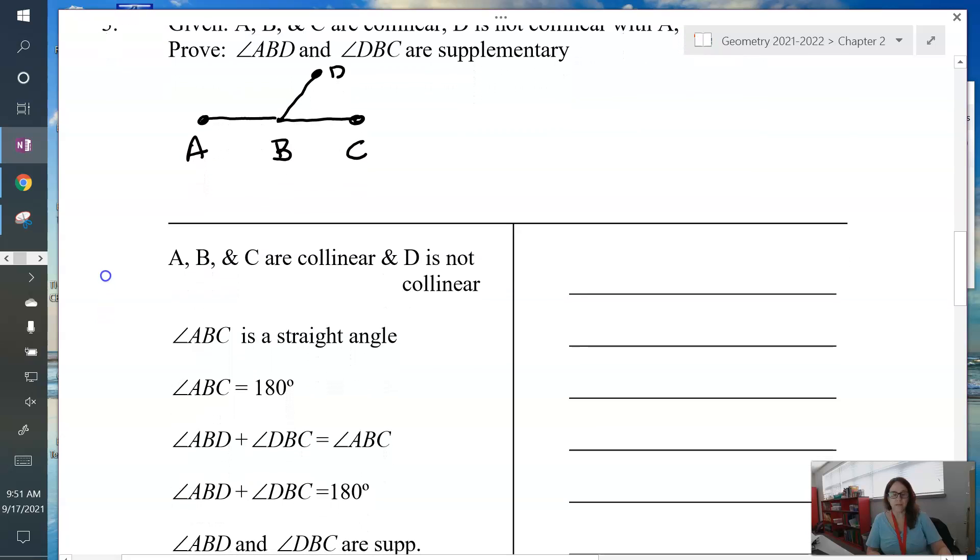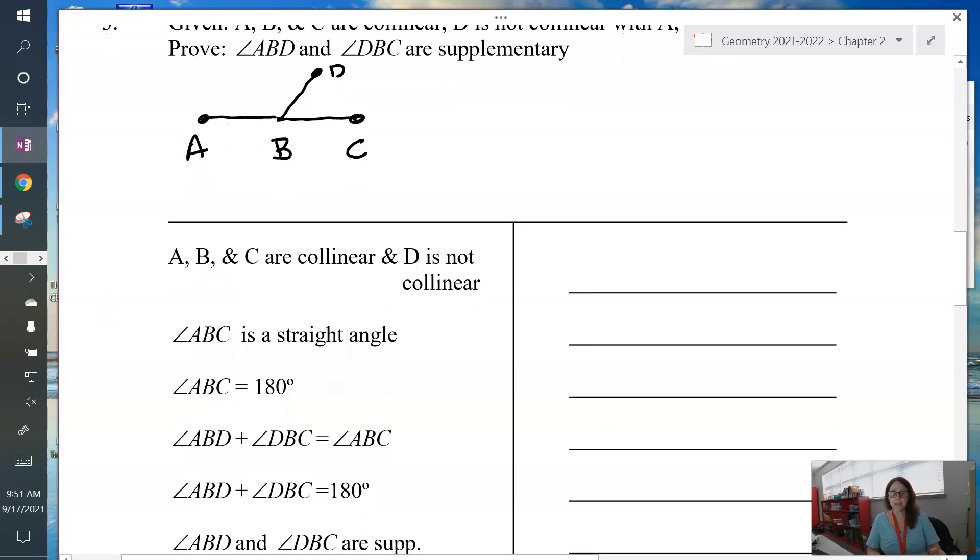What I've done here is I've given you the steps and what you're going to do is fill in the reasons. So A, B, and C are collinear, D is not collinear. Write down given. ABC is a straight angle. So if you look at ABC in the picture, that is a straight angle. Anytime you have a vocab word, that's a kind of a clue to say definition of, and then the vocab word, straight angle.